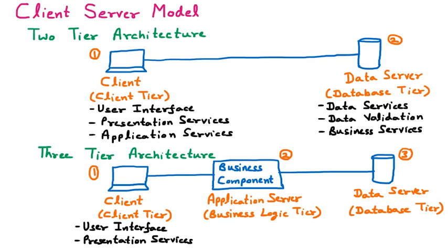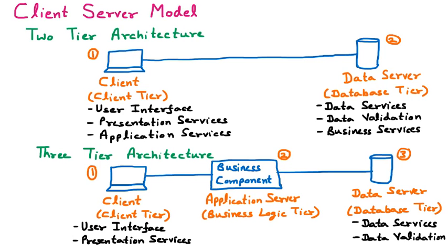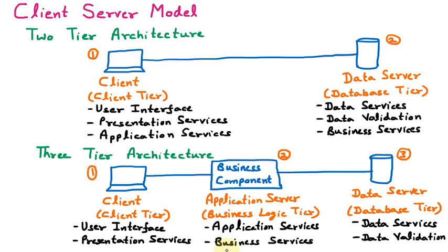In the data server of the three-tier architecture, we have data services and data validation. Data services manages what type of data is provided to the customer, such as tables in Oracle or SQL, and data validation means validating the data. In the business logic tier we have application services and business services, handling all business-related operations and the applications being provided.